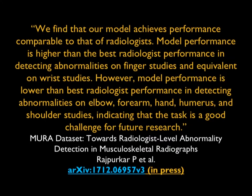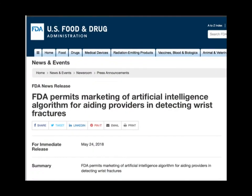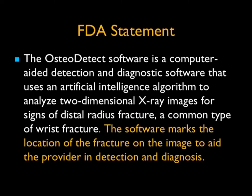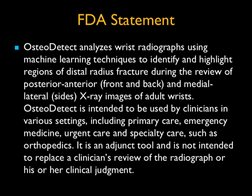Or this article looking at musculoskeletal radiographs, where performance for fractures at the wrist is as good as radiologists. Other areas are not quite there yet, and it got FDA approval because it helps. The FDA statement: the software marks the location of the fracture on the image to aid the provider in detection and diagnosis. It's not perfect, but in many places where there aren't radiologists — many ERs, small hospitals, offices — it is an adjunct tool and not intended to replace a clinician's review of the radiograph or clinical judgment.